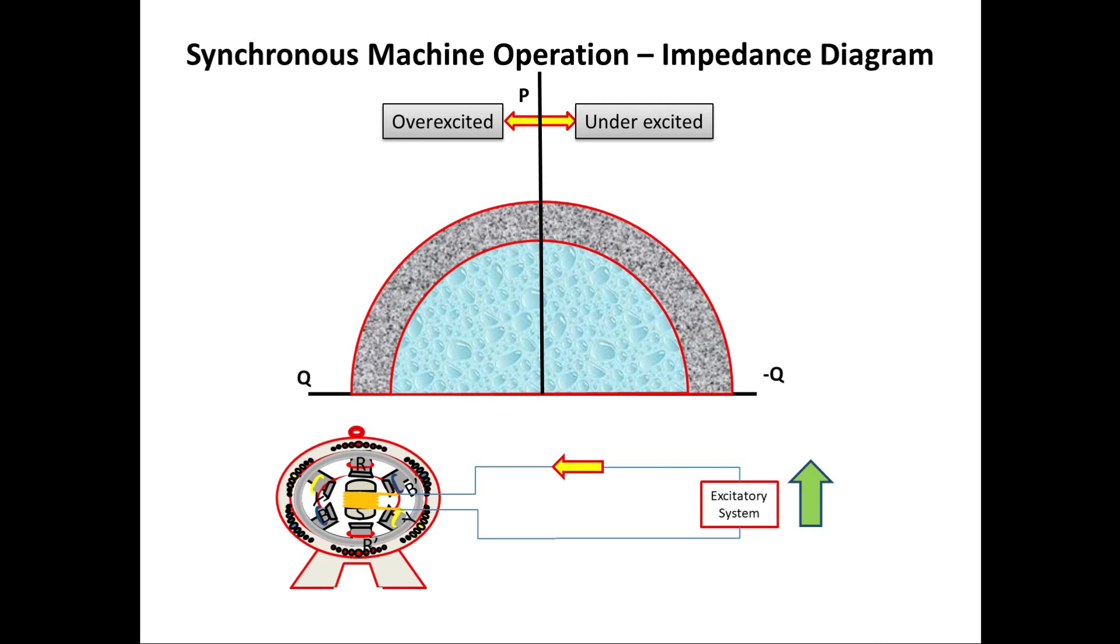Now let us consider the generator field excitation is high. So the field current will be high. In this field current will flow on rotor. So this region we can say the rotor winding limit or the armature current limit.